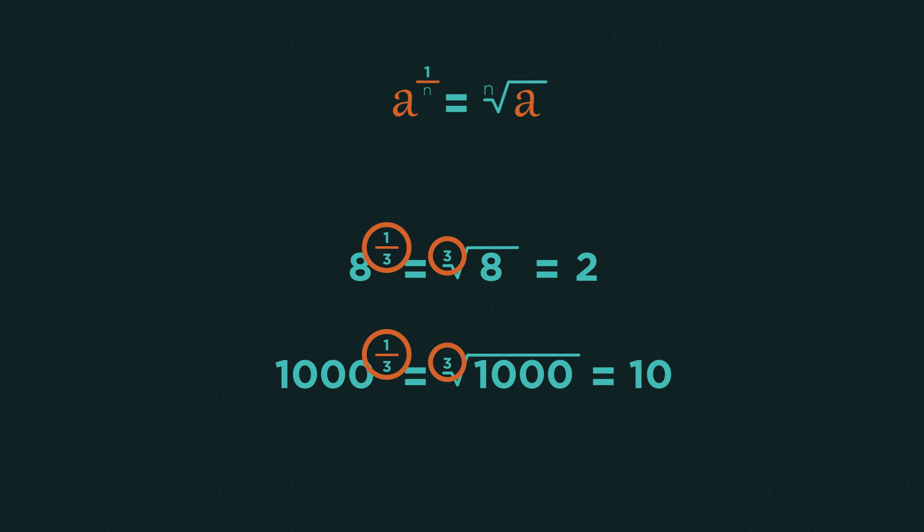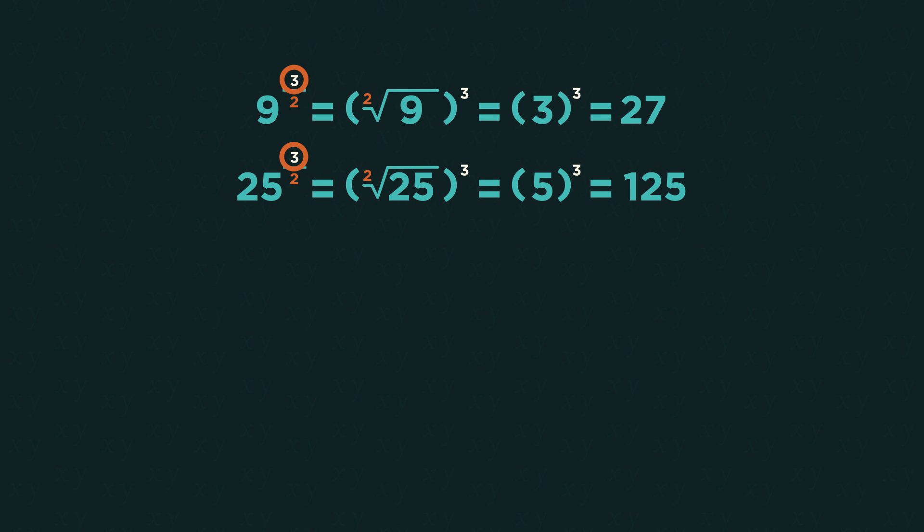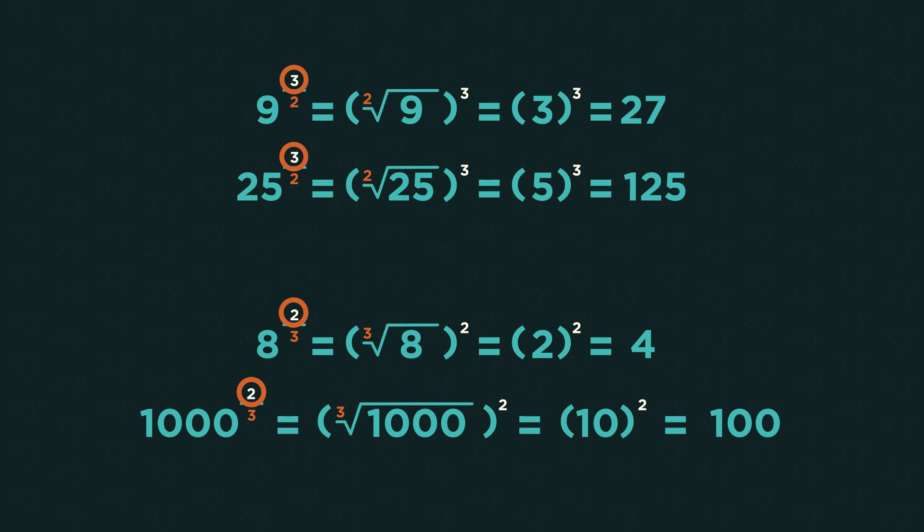But what if the numerator isn't 1? So 3 over 2 and 2 over 3. What happens now?